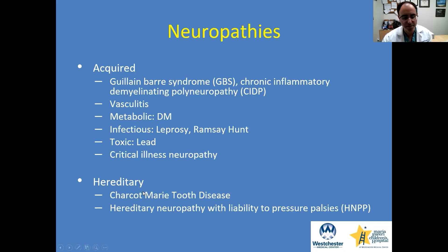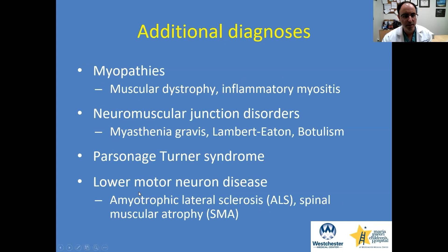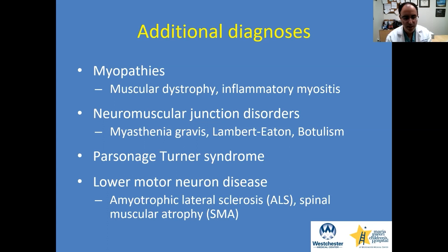We also discussed some genetic underpinnings of these diseases. Additional diagnoses to consider include myopathies, neuromuscular junction disorders, Parsonage-Turner syndrome, other inflammatory conditions, and lower motor neuron disease. Having a neurology colleague help flush these out is useful. These are listed here more to raise awareness — they belong more to the neurology world, but as a neurosurgeon it's important to be aware of them.